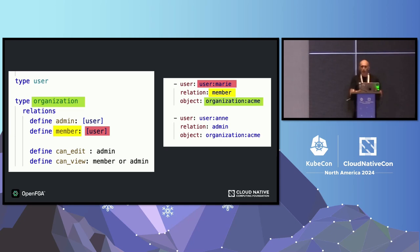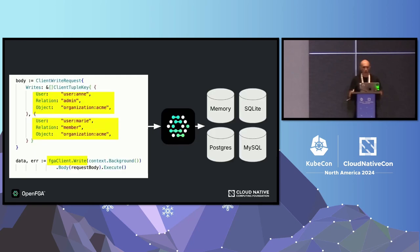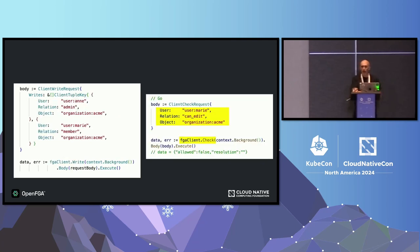You can then instantiate that model with data in the form of relationship tuples. In this case, we're saying that Marie is a member of the ACME organization, and Anne is an admin of the ACME organization. Then, using the Golang SDK — we have SDKs for multiple platforms — you can write those tuples to the database. OpenFGA supports different database storage technologies. And when you want to know if a user can perform an action on a resource, like whether Marie can edit a specific organization, you call the Check API. So: write the data, then check to perform an authorization check.